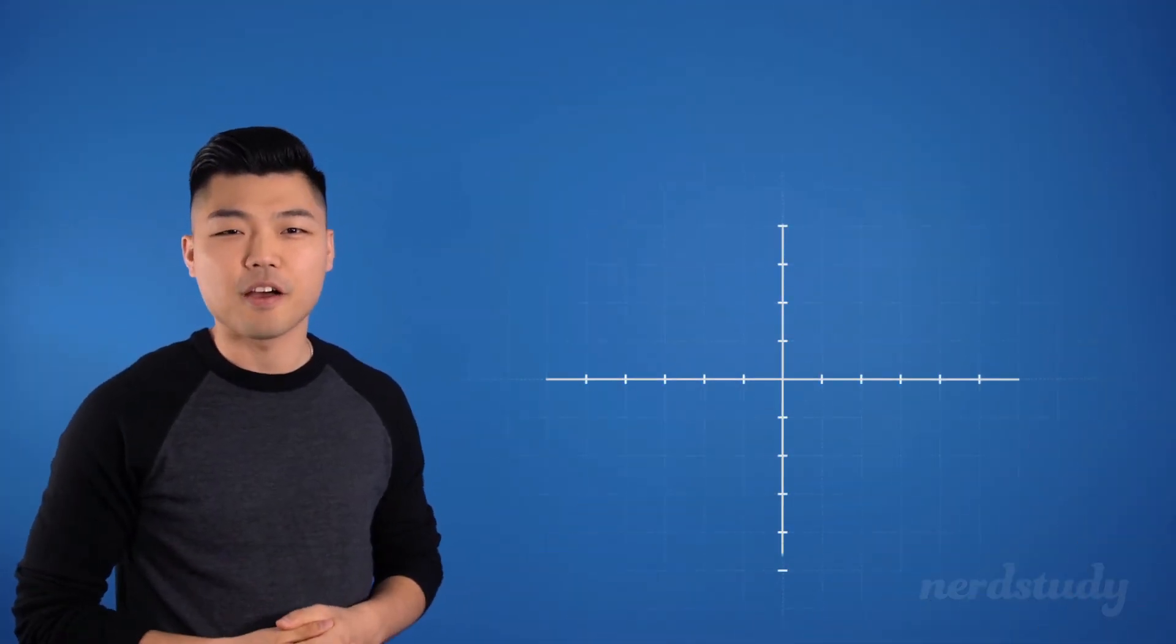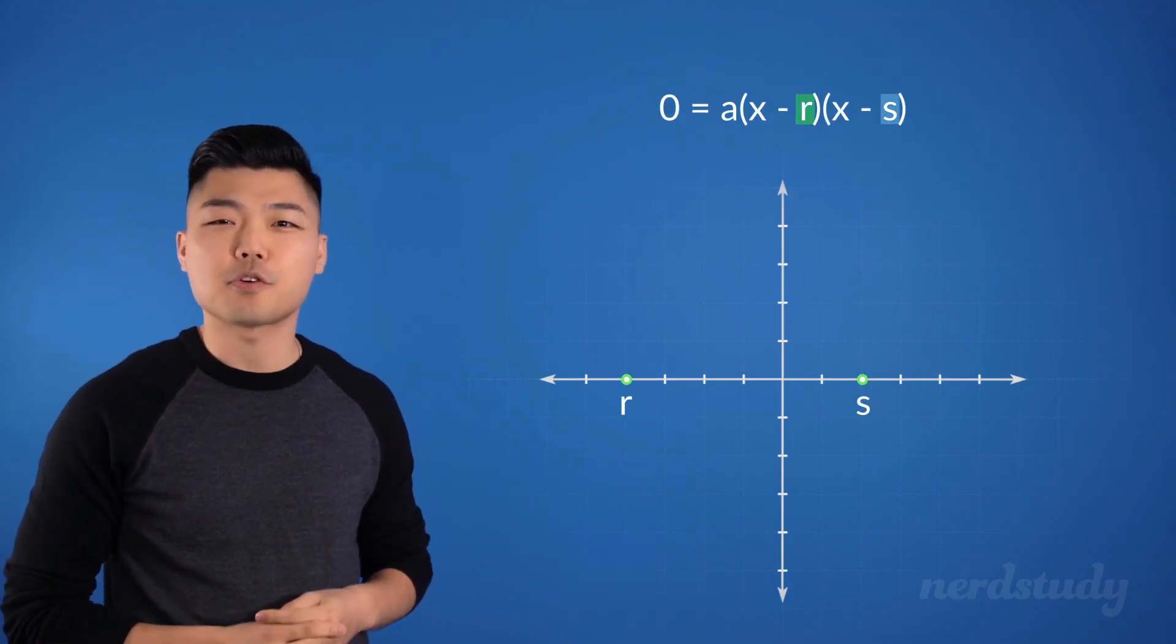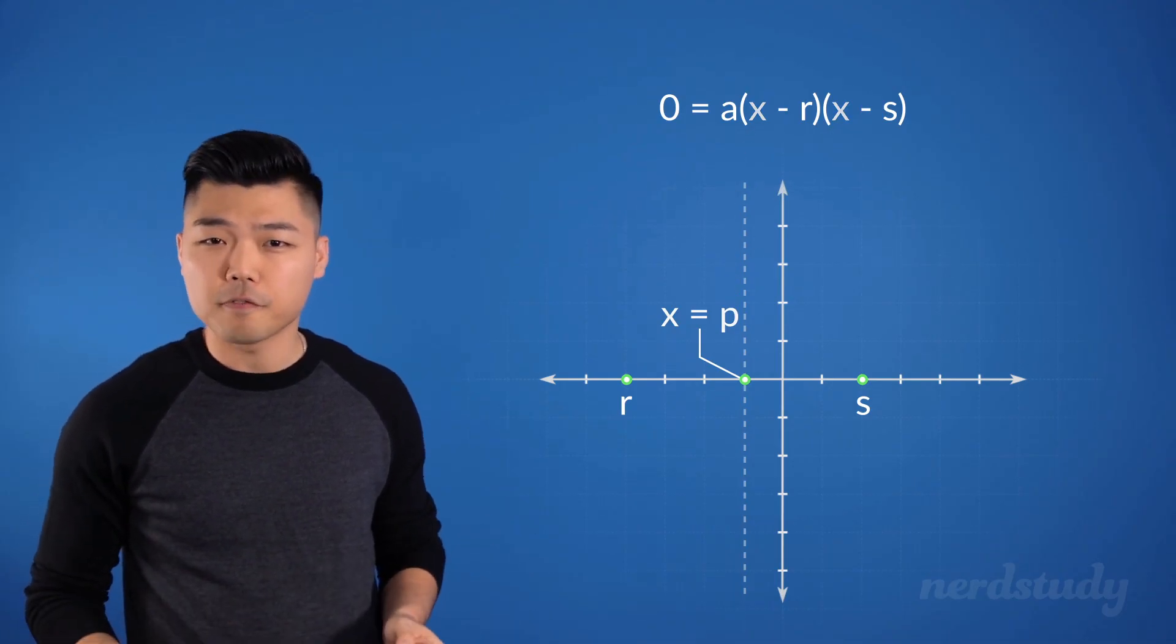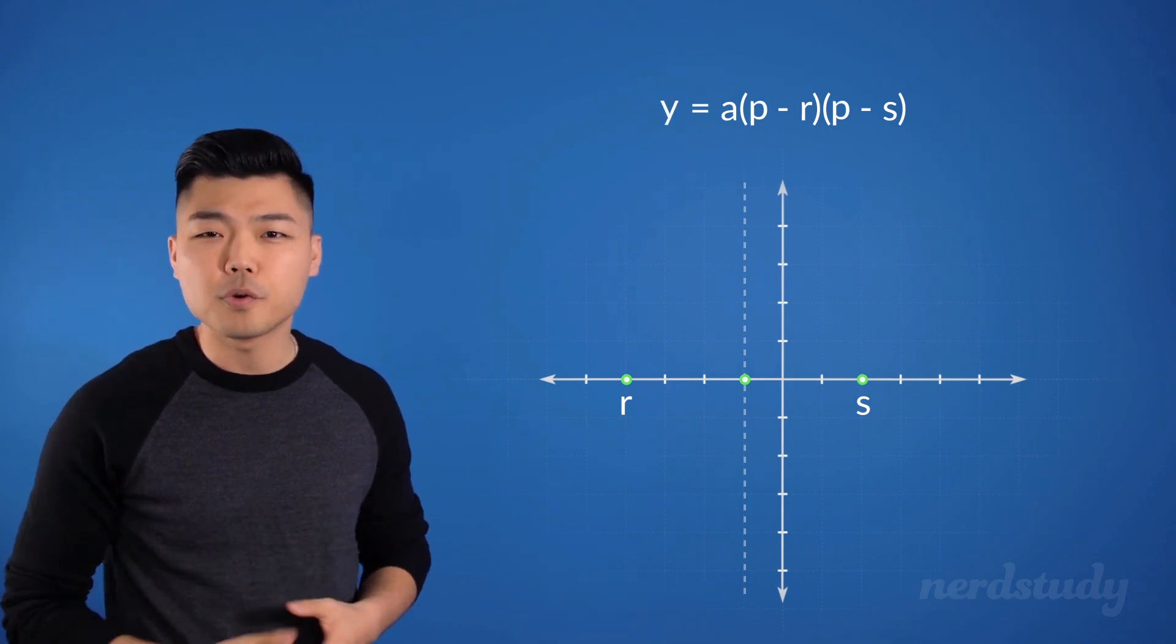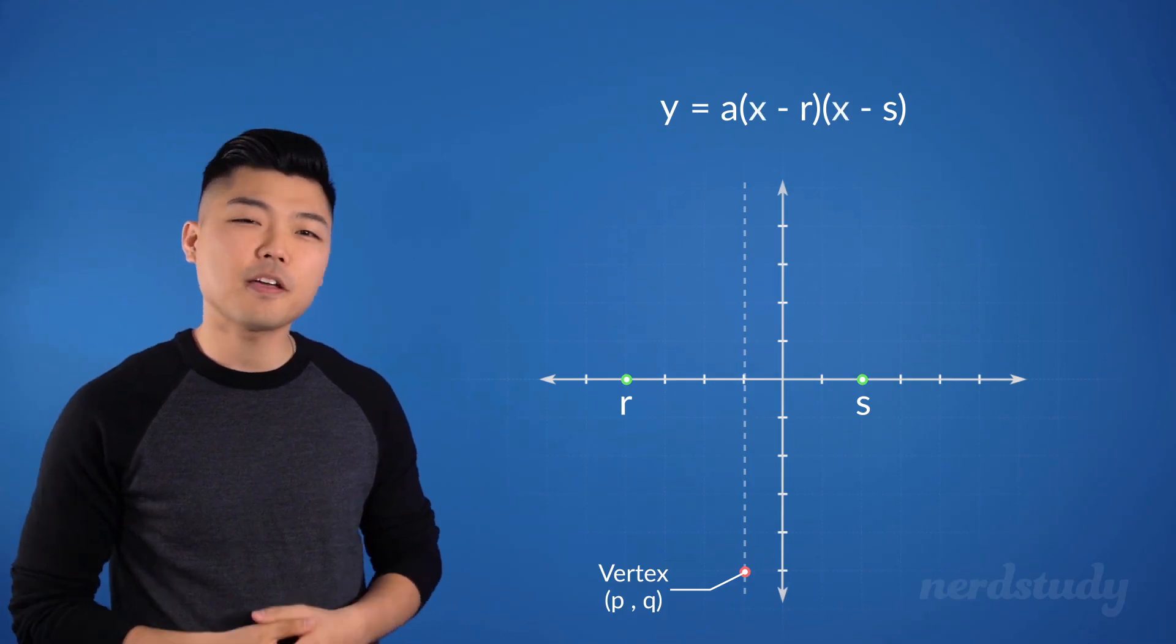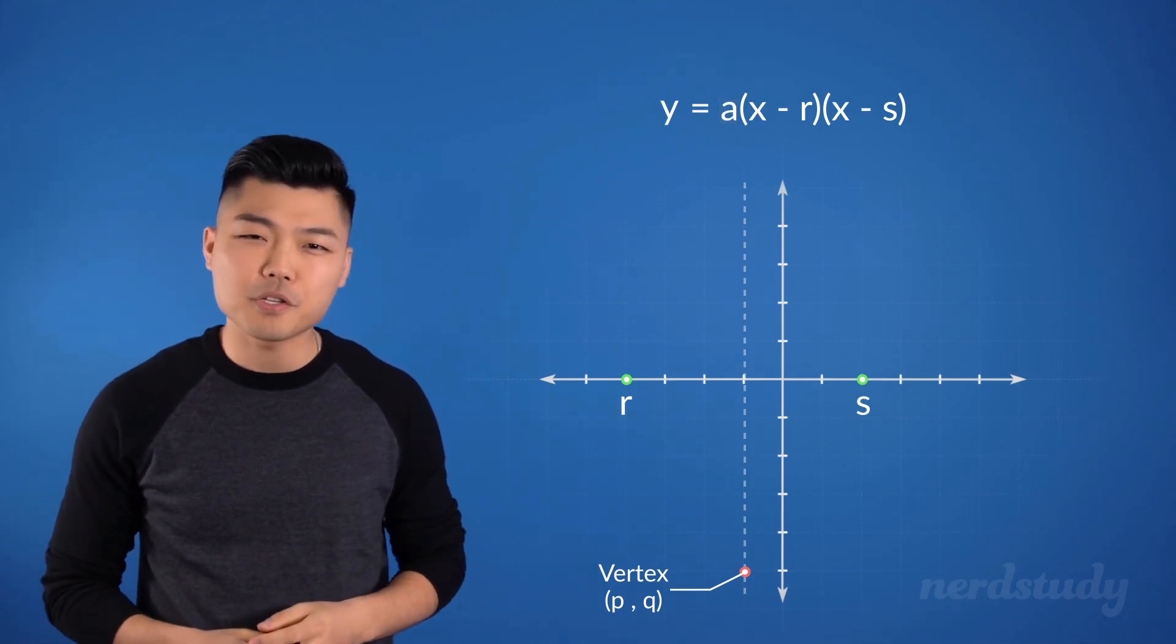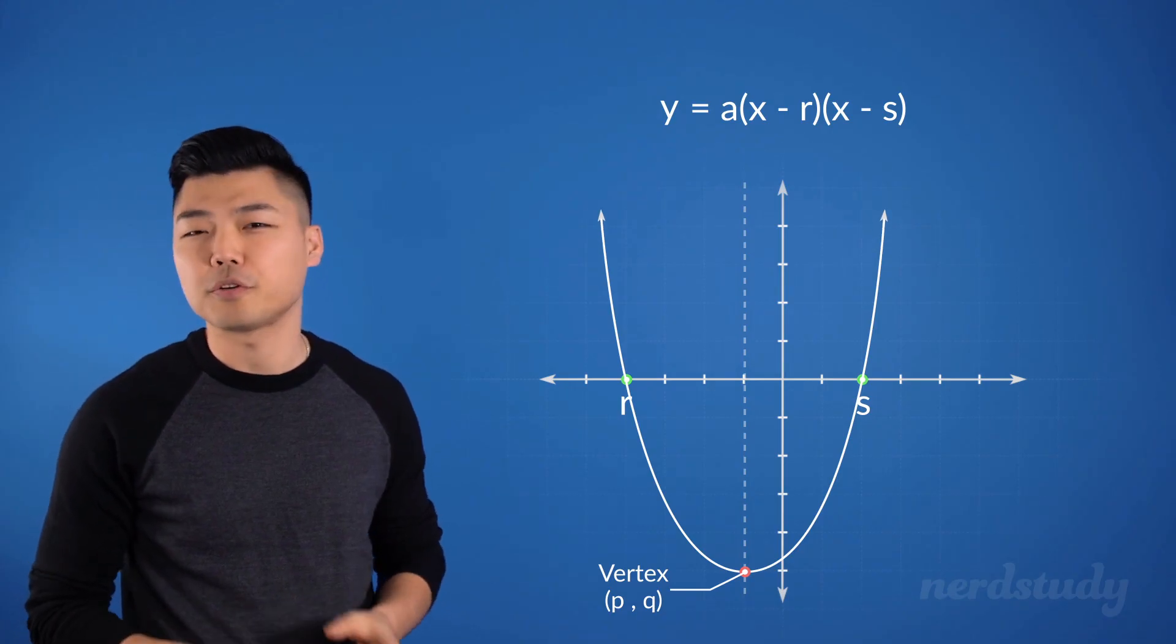all you need to do when sketching a graph from the factored form is to identify the roots of the equation, find the midpoints of the roots if it's a case that there are two roots, plug the x value of the midpoint back into the factored form, obtaining the y value in order to find the vertex, and finally, identify if a is positive or negative to determine its direction of the graph. With all this information, you can draw a rough sketch of how our parabola will generally look.